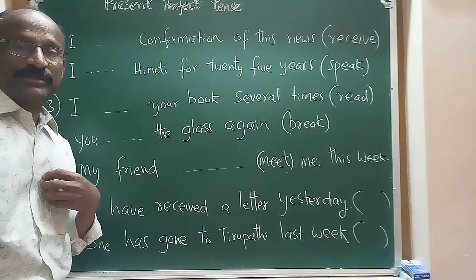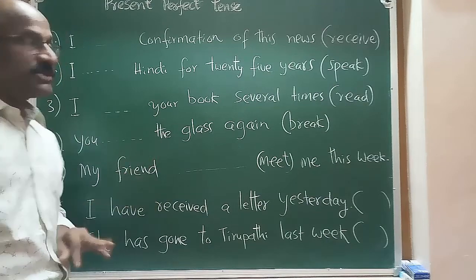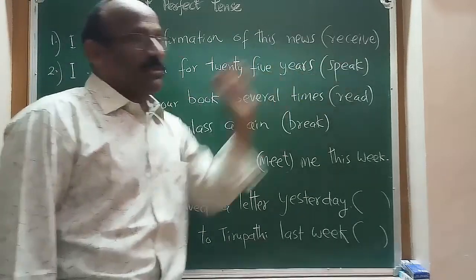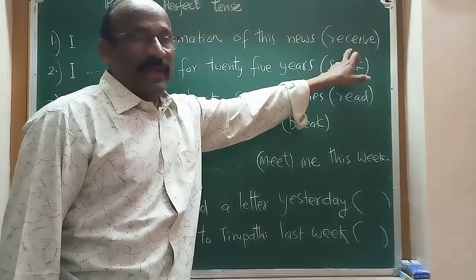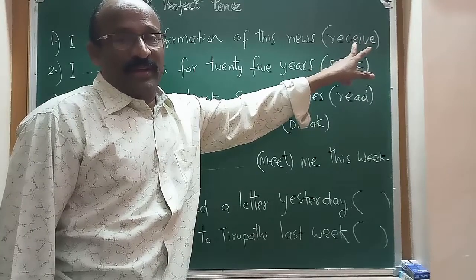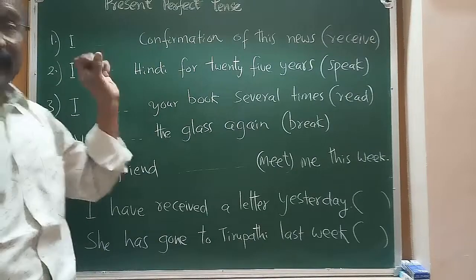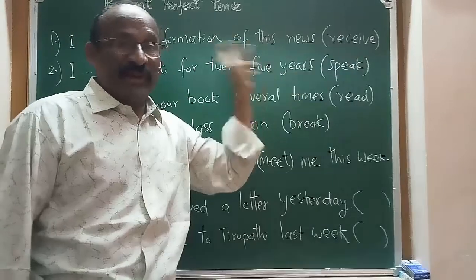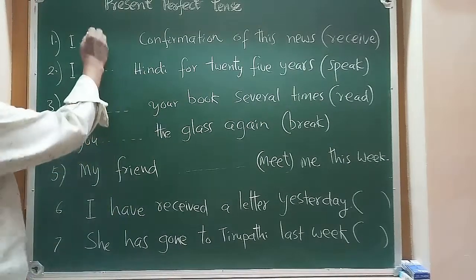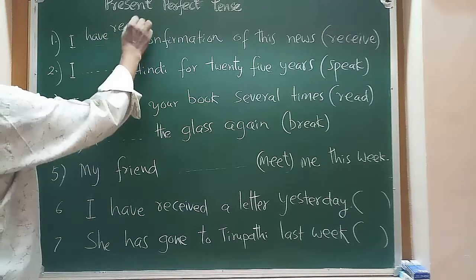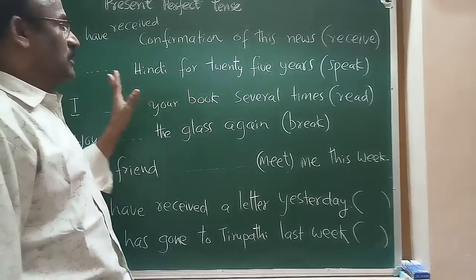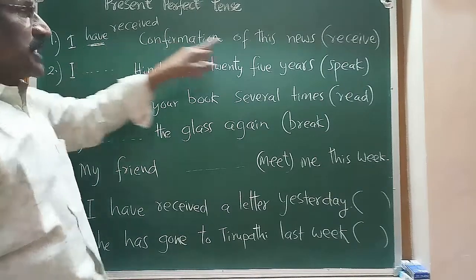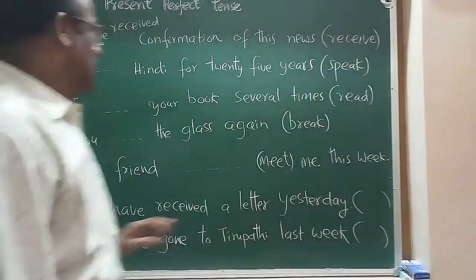Now let's do a small exercise. Sentence: 'I have written _____ confirmation of this news.' The missing word is 'received.' So: 'I have received confirmation of this news.' The past participle of receive is received — receive, received, received. There is no time mentioned, so present perfect is correct here.